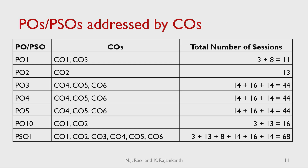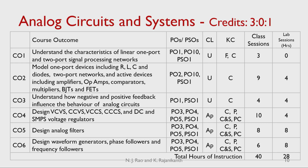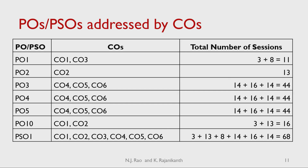Now, for each PO, we determine which COs are relevant. Looking at the table, PO1 is addressed by CO1 and CO3 only. We make a table for each PO listing all COs which address it. PO1 is addressed by CO1 with three sessions and CO3 with eight sessions, so the total number of sessions devoted to PO1 is 11. Similarly, PO2 is addressed only by CO2 with a total of 13 sessions. Similar calculations are done for PO3, PO4, PO5, PO10, and PSO1. The remaining POs — PO6 through PO12 and PSO2 — are not addressed by this course at all.